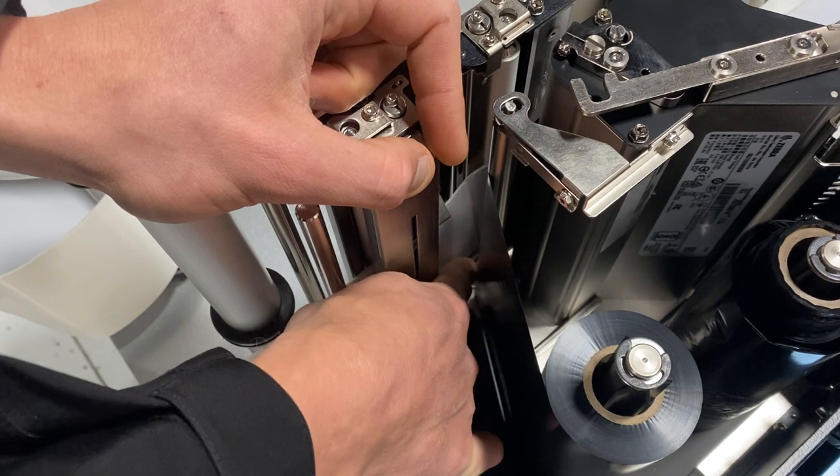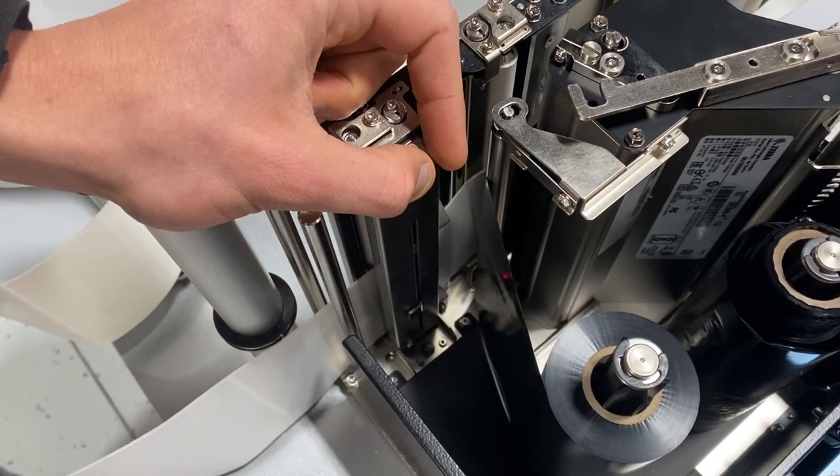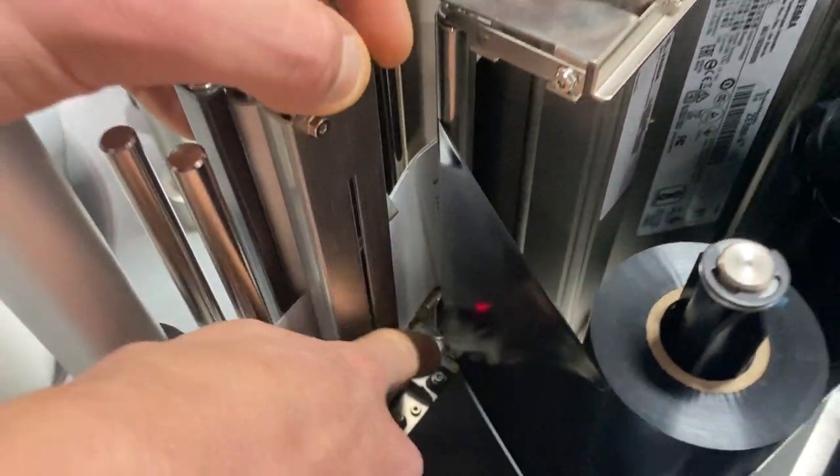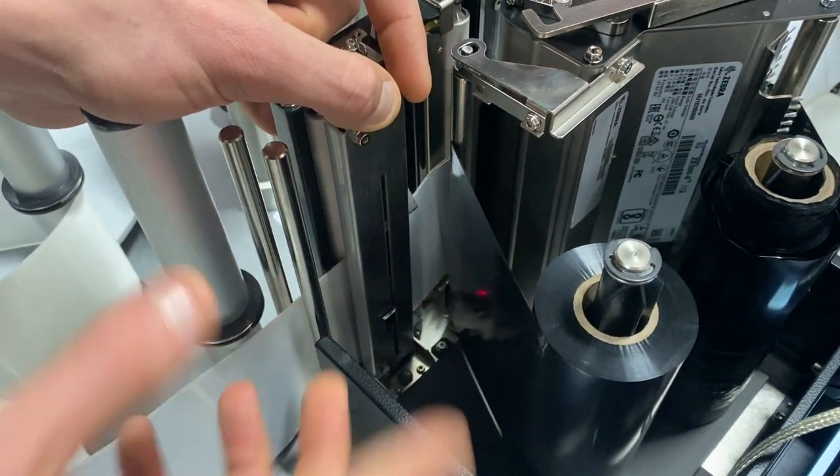My ribbon has to be on the top of that metal plate, and my label needs to be below it. Super easy to put the label above this plate. If you do that and you start running, it's just going to tear the liner and create a mess for you. This has to do with our ribbon sensor, which we'll talk about shortly.